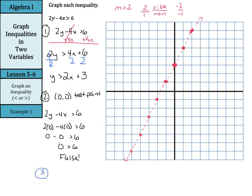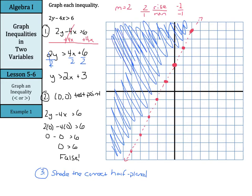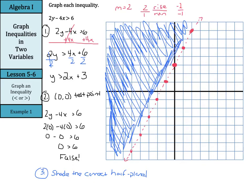In step 3, let's shade the correct half plane. Our correct half plane is going to be over here on this side. Those who know me know I am no artiste, so just kind of shade — don't spend too much time coloring. The math is much more important than coloring. So that is the graph of the inequality 2y minus 4x is greater than 6.